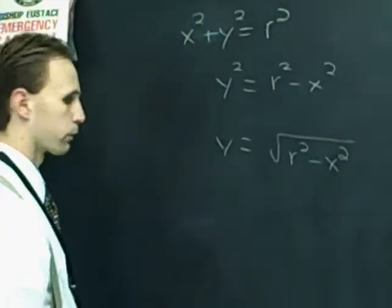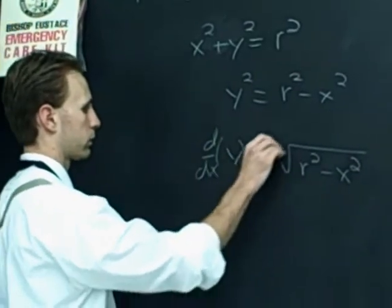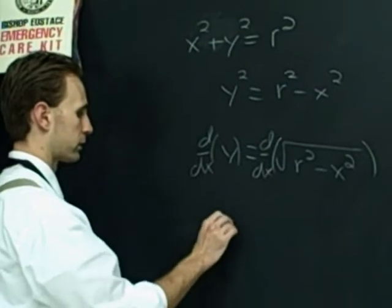And then you do the differential operator to both sides. Differentiate with respect to x. This gets symbolized as dy dx.